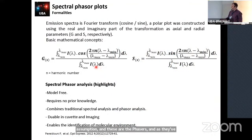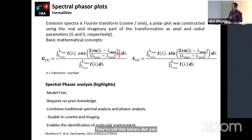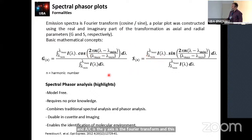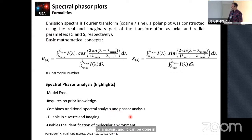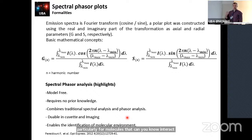Technically speaking, the spectral phasor is a rearrangement of the formula Dave described. If you calculate G and S, this is a complex number — G is the X axis, S is the Y axis. It is the Fourier transform: G is the real component and S is the imaginary component. The important property of the spectral phasor is that it is model-free and does not require previous knowledge. It combines traditional spectral analysis with phasor analysis and can be done in cuvette or in imaging.